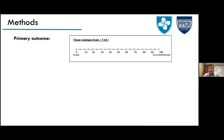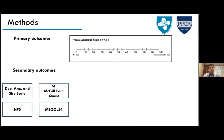The primary outcome was the Visual Analog Scale (VAS), a 0–100mm scale. Secondary outcomes included the Depression Anxiety and Stress Scale, the short-form McGill Pain Questionnaire, the Multiple Sclerosis Quality of Life scale, and the Neuropathic Pain Scale. The presenter asks participants to classify the variable type of these scales, noting this determines the statistical analysis approach.